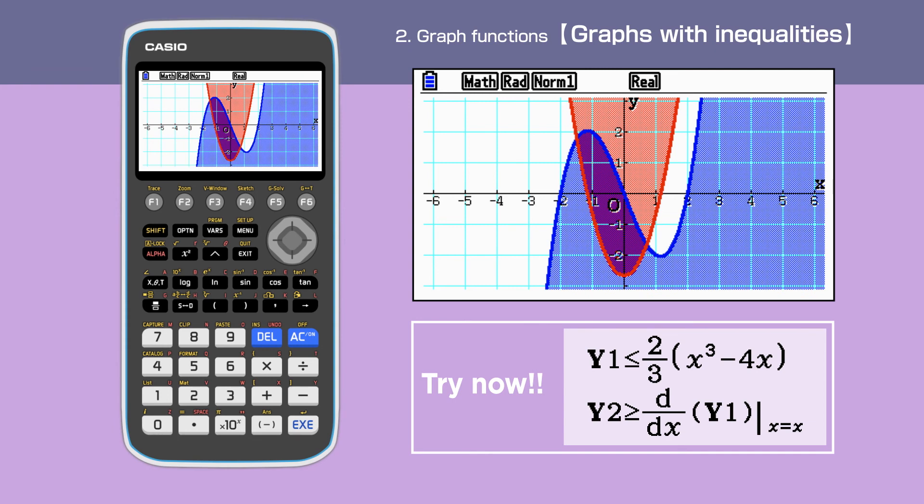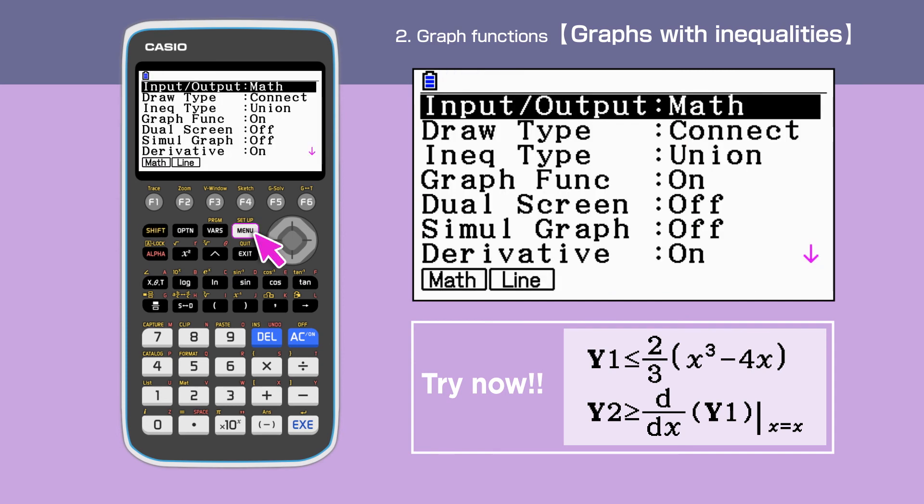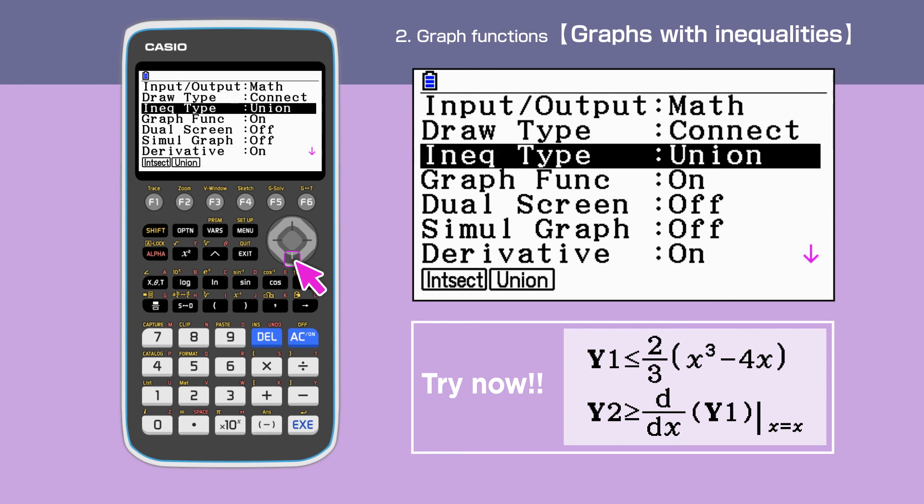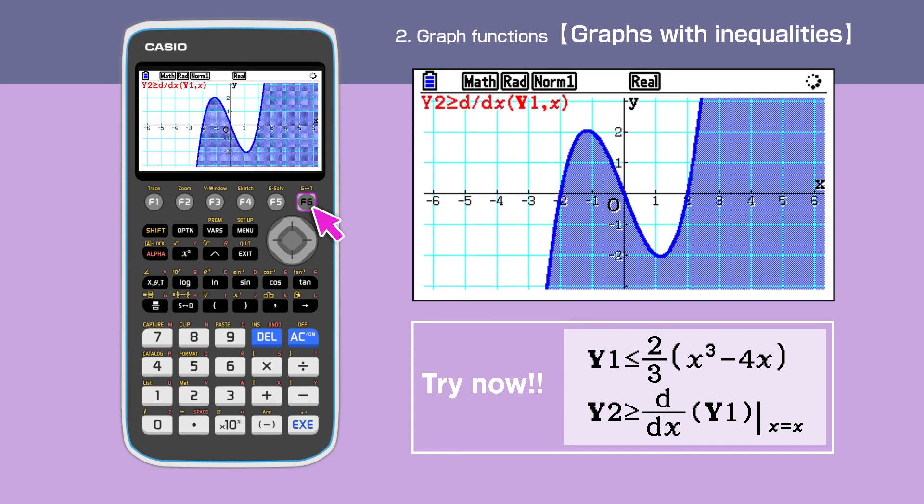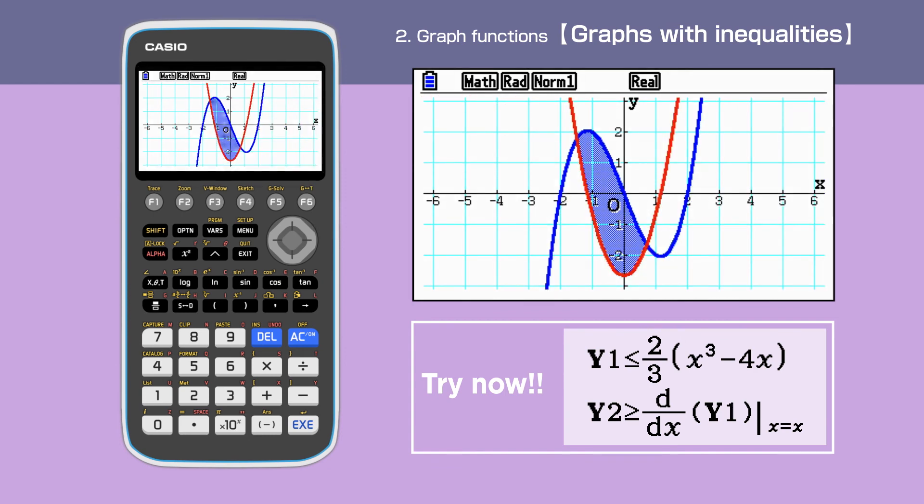but we can change this into intersection areas. To do this, press shift, menu, and change inequality type to intersection. We finish setting up by pressing exit and enter F6 to draw. Now we have the intersection area highlighted.